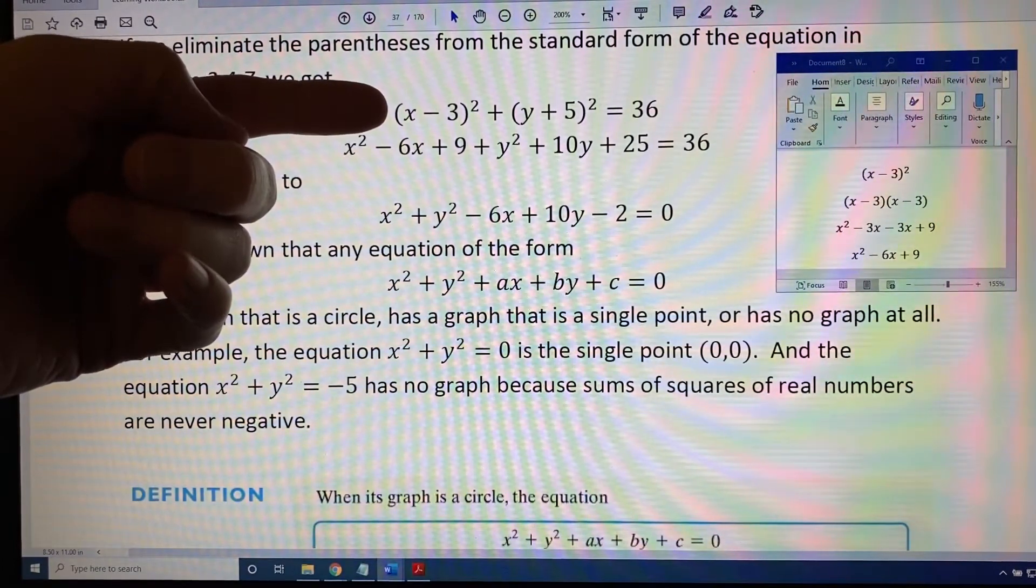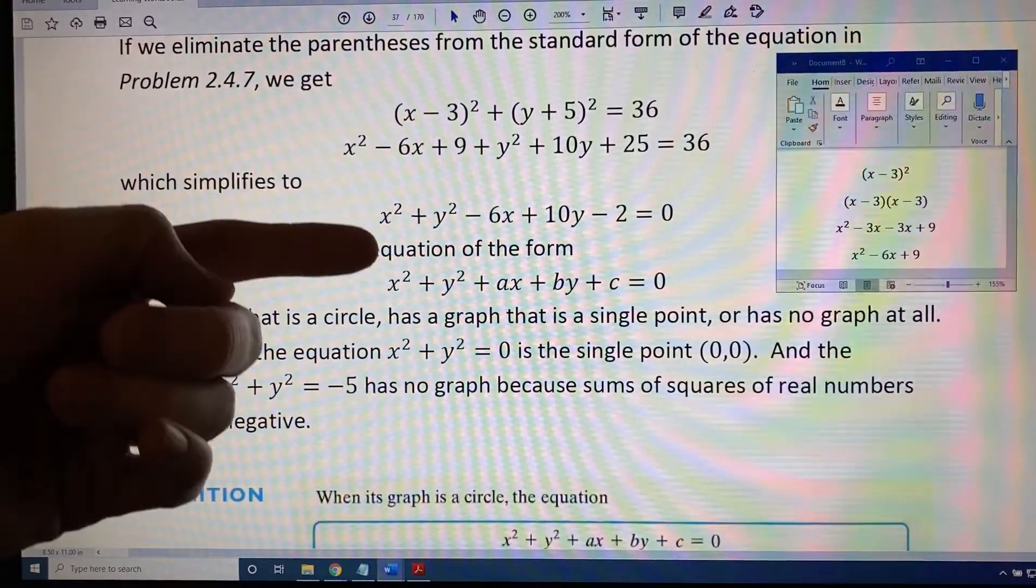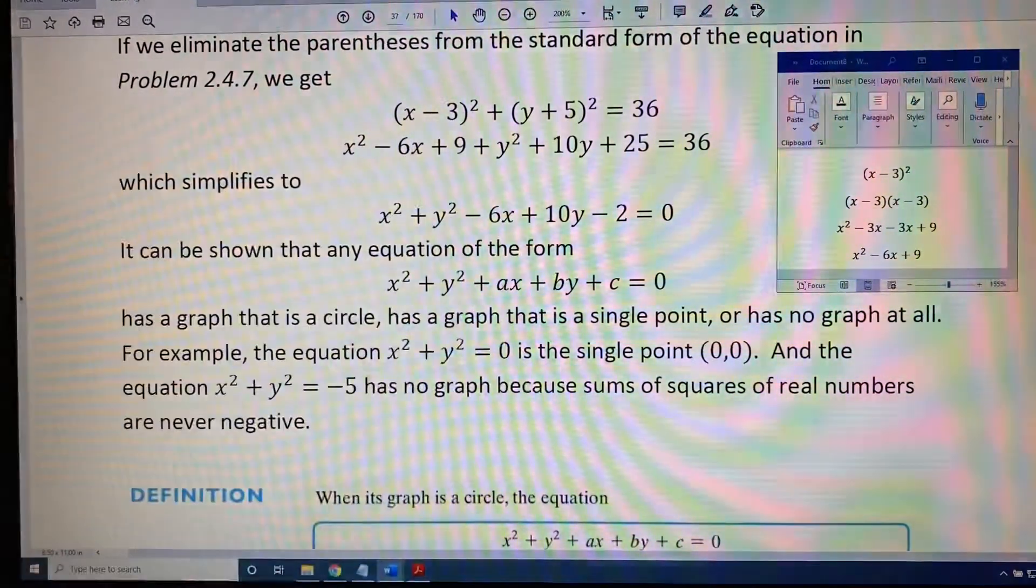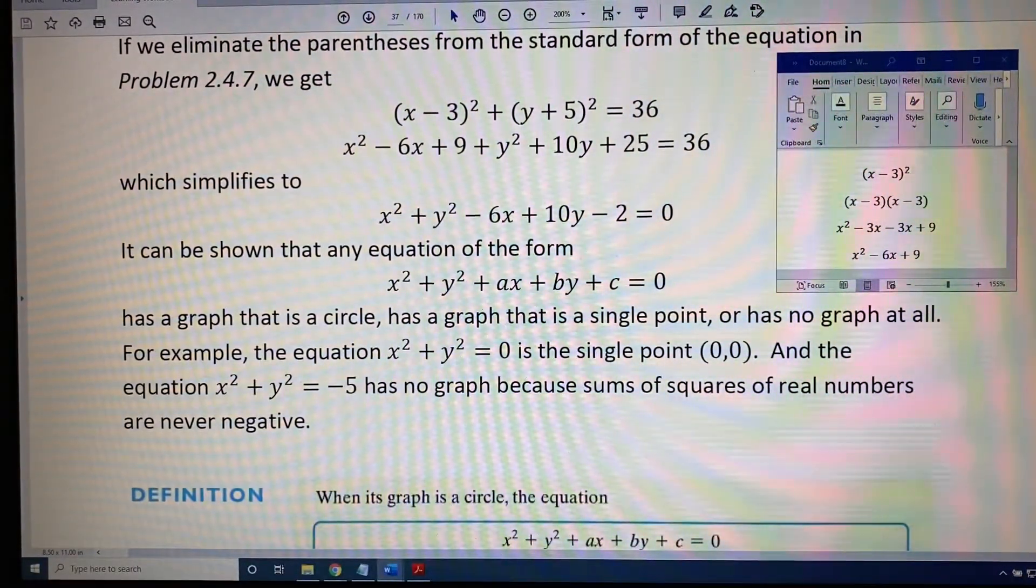In order to take this from standard form and write it in general form, we need to get rid of the parentheses, which we do with FOIL.